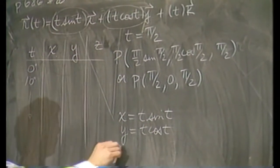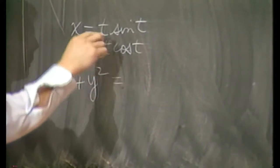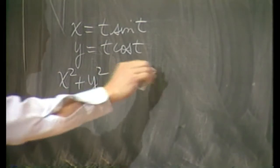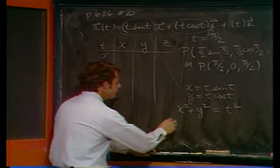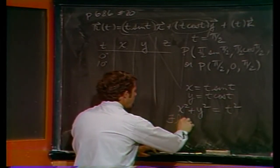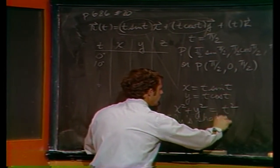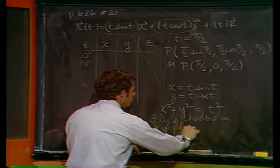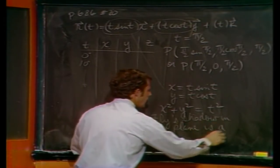For example, if I add these squares, we'll get t² sin² t plus t² cos² t. Of course, that just resolves itself down to t². Now, what that says to me is the fly's shadow in the xy plane is a spiral.